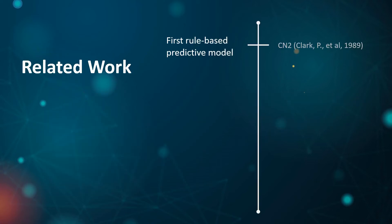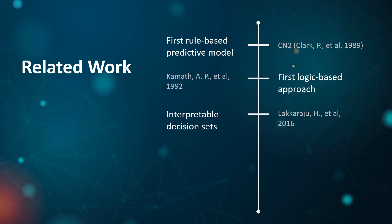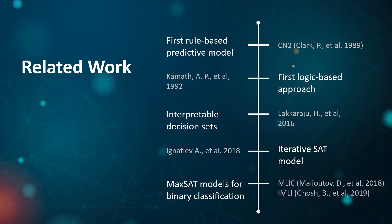As much related work, interpretable decision sets are a rule-based predictor model that can be traced back to CN2. To the best of our knowledge, the first logic-based approach to the problem of decision set inference was proposed in 1992. Later, decision sets were considered as a more explainable alternative to decision trees and decision lists in 2016. An ILP-based model was constructed to learn minimal decision sets in terms of the number of rules in 2018, and the SAT-based approach was also shown to extensively outperform the heuristic approach of CN2. In 2018 and 2019, the MaxSAT model was defined for binary classification, where the authors consider a model that minimizes a linear combination of size and hinge loss to control the trade-off between accuracy and interpretability.